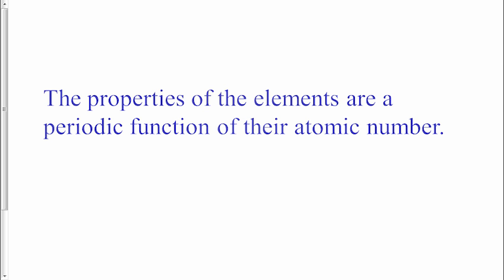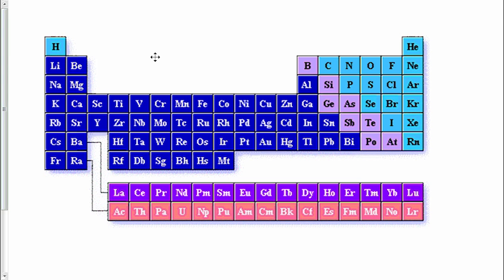The modern periodic law states, properties of the elements are a periodic function of their atomic number. Now we can take a look at our modern periodic table, and this is the one that you are probably most familiar with.